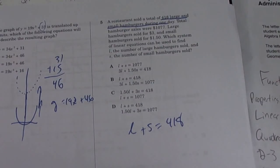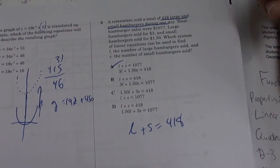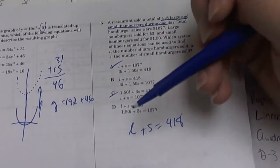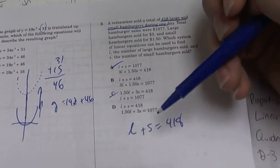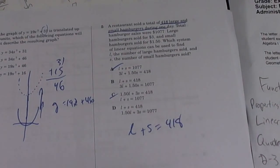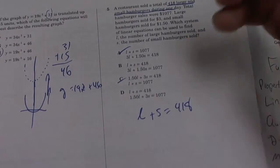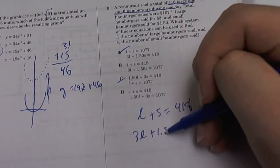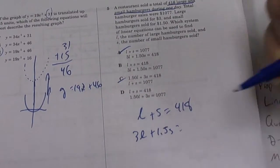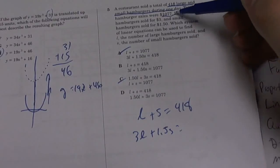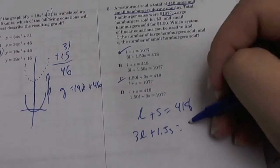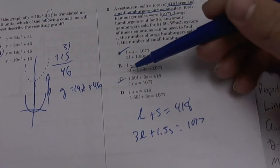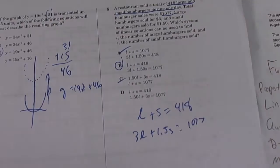So right away we can cancel that one. We can cancel that one as well because it's just telling us the amount of large burgers, the amount of small burgers is equal to 418. The next is saying one large burger was sold for $3 and the small was sold for $1.50. And the total sales were 1,077. So this has to equal to 1077. So which one of these is left? 3L plus 1.50S. The answer is B.